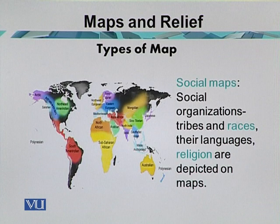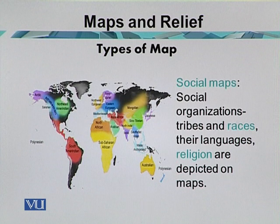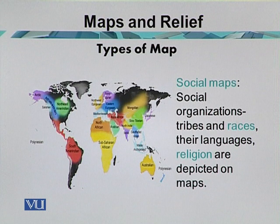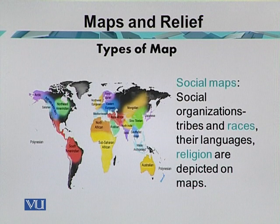The second category of the map according to purpose is the social maps. Social maps show organizations, tribes and races, their languages, and religions depicted on these types of maps. These maps are made using certain techniques for certain purposes behind social maps.